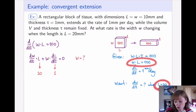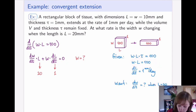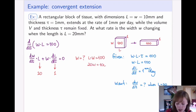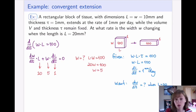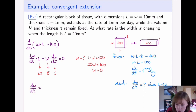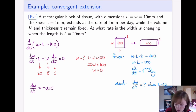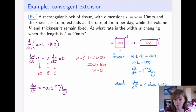Once all numbers are in place, dW/dt comes out to be −1/4, or −0.25 millimeters per day. Notice that in this problem we had to do an extra step of figuring out what was implicitly given but not yet explicitly calculated. As in all word problems, it's a good idea to check whether the answer makes sense.